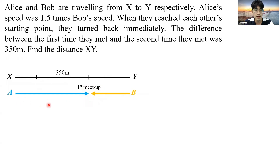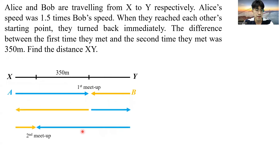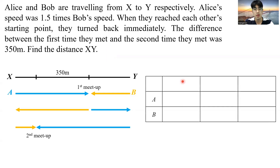They continue traveling to X and Y and immediately turn back. When they meet up for the second time, the distance between the first meeting point and the second meeting point is 350 meters. The speed ratio of Alice to Bob is 3 to 2. For the first meetup, they have traveled a total distance of 2 XY.